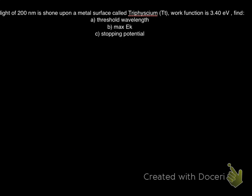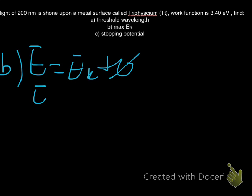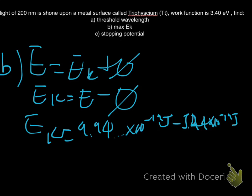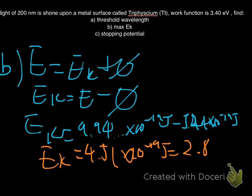Moving on to B, I know that E is equal to Ek plus the work function. Ek is equal to the energy of light, subtract the work function. Ek is equal to 9.94 times 10 to the negative 19 joules, subtract 5.44 times 10 to the negative 19 joules. This gives me a kinetic energy of 4.51 times 10 to the negative 19 joules, or in electron volts, 2.82 electron volts.